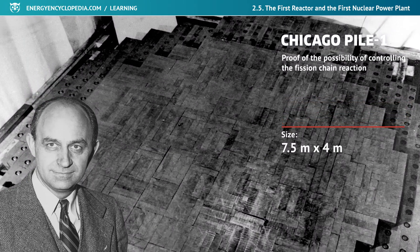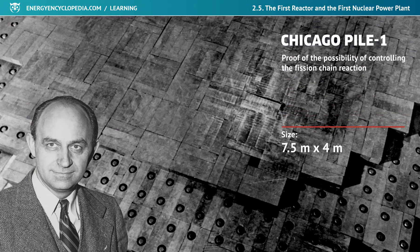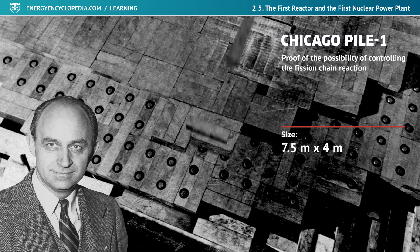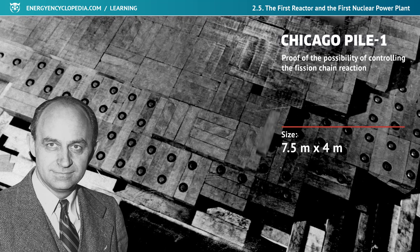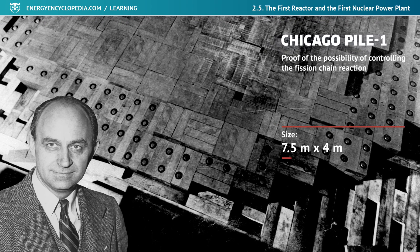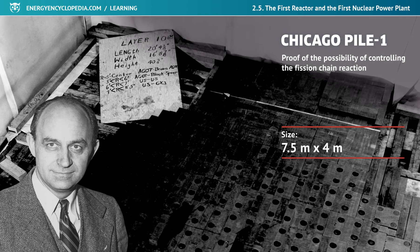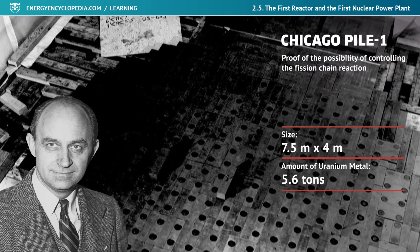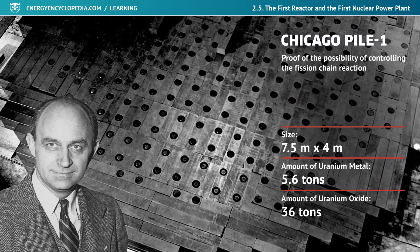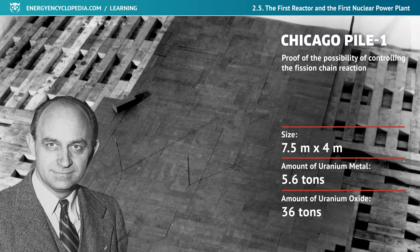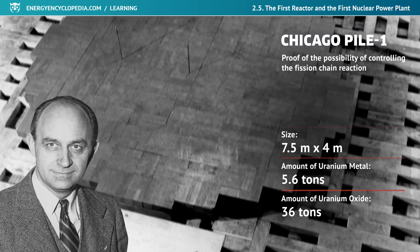A 7.5-meter-wide, 4-meter-high, and 350-ton-weight pile of graphite blocks interspersed with blocks of enriched uranium served as the foundation. The ellipsoid-shaped reactor core used 5.6 tons of uranium metal together with 36 tons of uranium oxide in the form of pressed spheres.